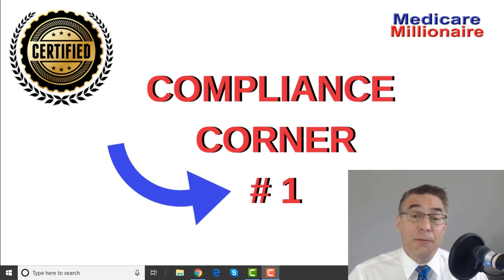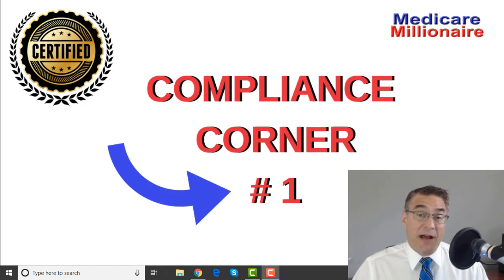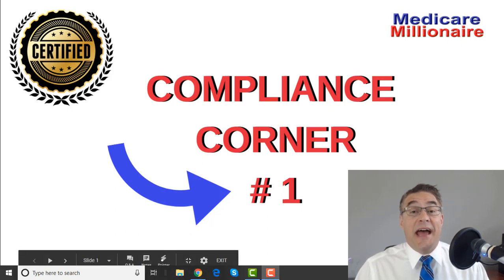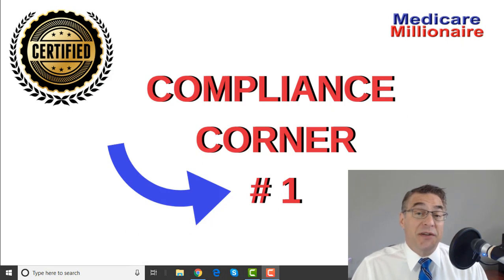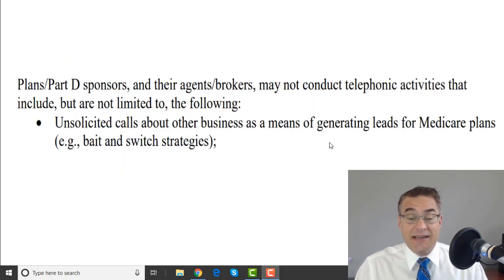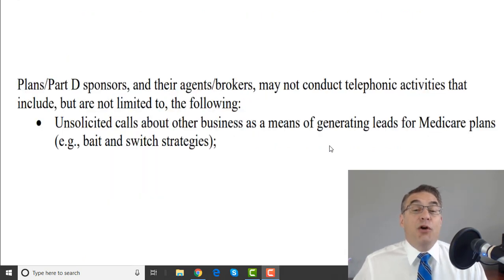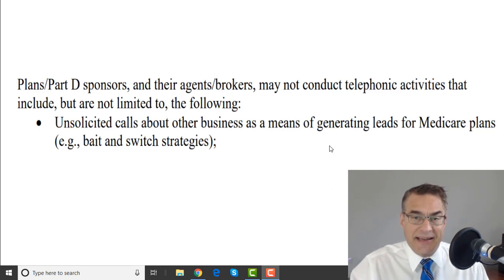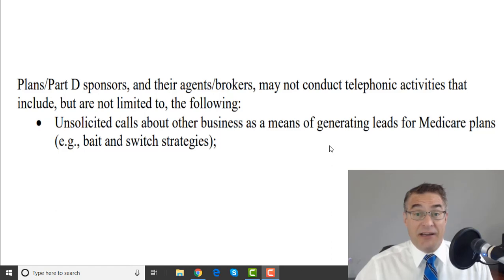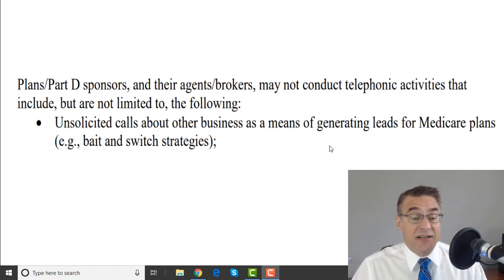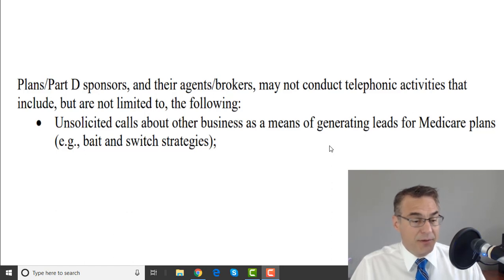We're going to go over the rules for unsolicited contacts per CMS, just briefly, because it's very simple. The interpretation is really where we have problems, and we're going to address those problems. Most importantly, I'm going to give you what I feel is an adequate solution going forward. Per the most recent CMS guidelines — September 5th, 2018 — the prohibited activity reads: plans, sponsors, and their agents and brokers may not conduct telephonic activities that include but are not limited to the following.